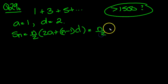So let's see what we've got then. First of all, 2a is 2 lots of 1, a is 1, so I'll put it in, plus n minus 1, lots of d, which is 2.